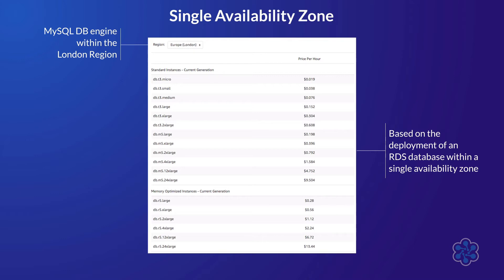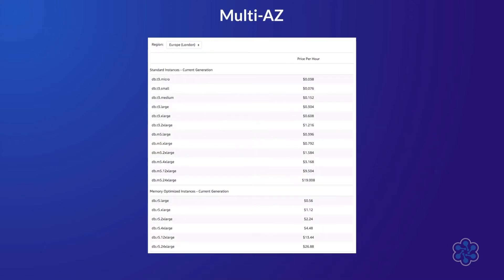As an example, the following table shows the pricing for each of the available instances with the MySQL database engine within the London region, based on the deployment of an RDS database within a single availability zone. You can also deploy your RDS database within a single availability zone or use a multi-AZ deployment to add a layer of high availability. This will incur additional costs for your standby instance to run in another availability zone, should your primary instance fail.